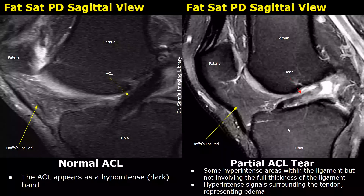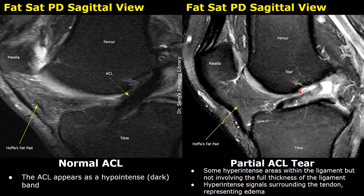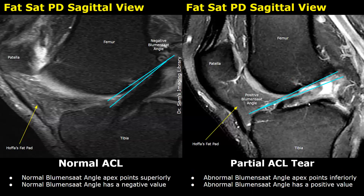Now we will look at partial ACL tear. In this case, some hyperintense areas can be seen within the ligament, but these areas do not involve the full thickness of the ligament — so this will be a partial ACL tear. The ligament is surrounded by hyperintense fluid, which indicates edema. By drawing the lines along the margin of the ACL and the lateral femoral condyle, we find the Blumensat angle apex points inferiorly and has a positive value.